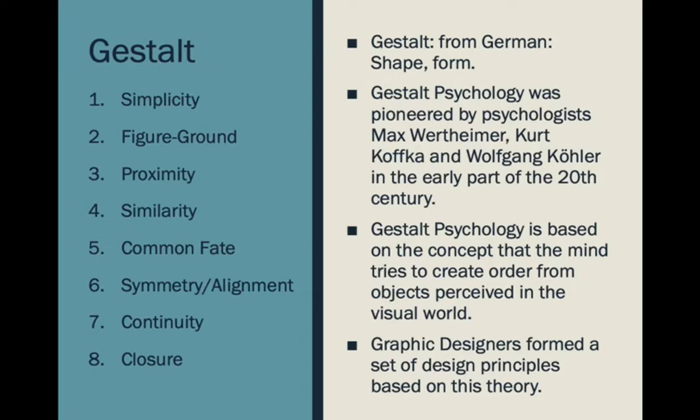Next is figure-ground — always being conscious about what's in the foreground and what's in the background, as our brain tries to organize things based on perspective. Third is probably one of the more important ones: proximity. When the brain sees things close together, it assumes they're part of a group. Similarly, common fate — things that all look like they're pointing in the same direction seem to be part of a group.